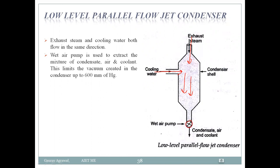From the low level parallel flow jet condenser, we extract three outputs: an air pump removes air, condensate is removed, and the coolant is also taken out. The vacuum pressure maintained here is approximately 600 mm of Hg.